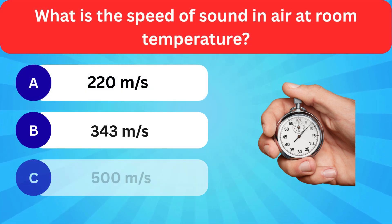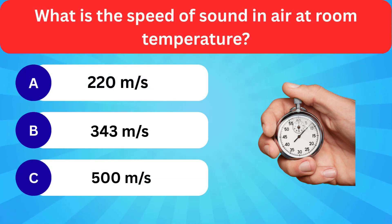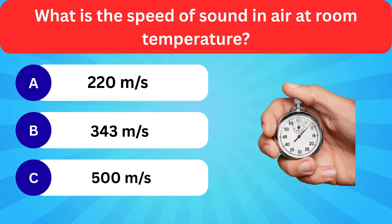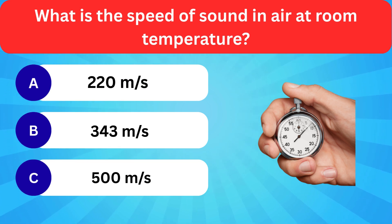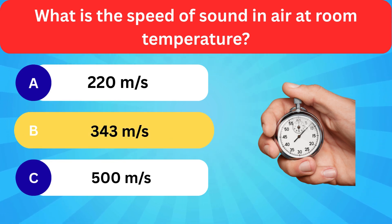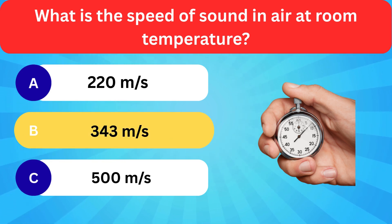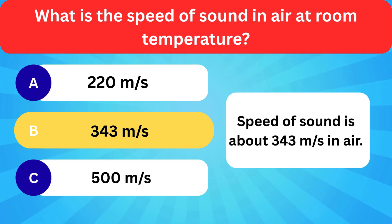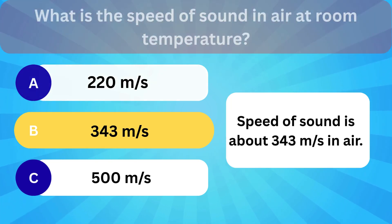What is the speed of sound in air at room temperature? Options: 220 m/s, 343 m/s, 500 m/s. Correct answer is 343 meters per second. Speed of sound is about 343 meters per second in air.